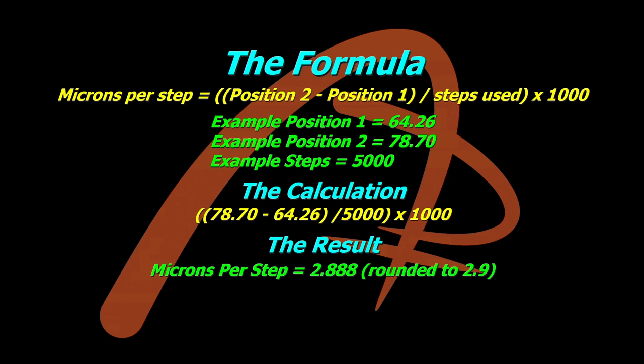So in the example we're doing here, I had 64.26 for position 1, 78.7 for position 2, and the steps were 5,000. So it's 78.7 minus the 64.26, divide that by the 5,000 steps and multiply the result by a thousand, and you end up with a microns per step of 2.888 which rounds out to 2.9. So that's your microns per step and that's a figure you'll use in the settings for autofocus aid.